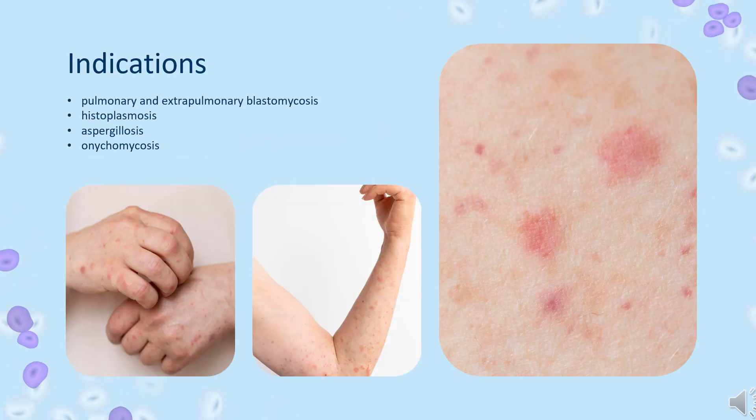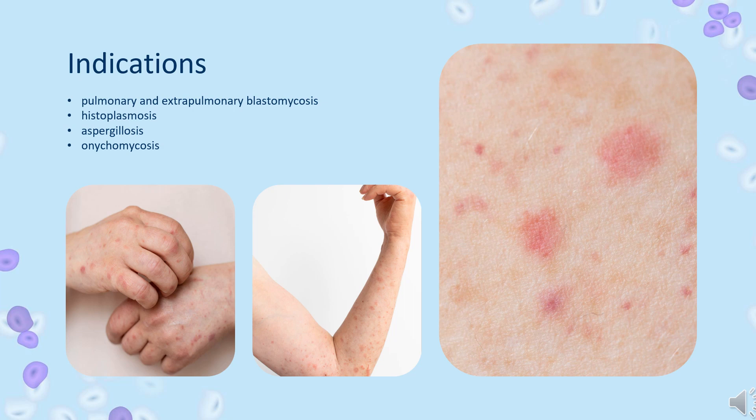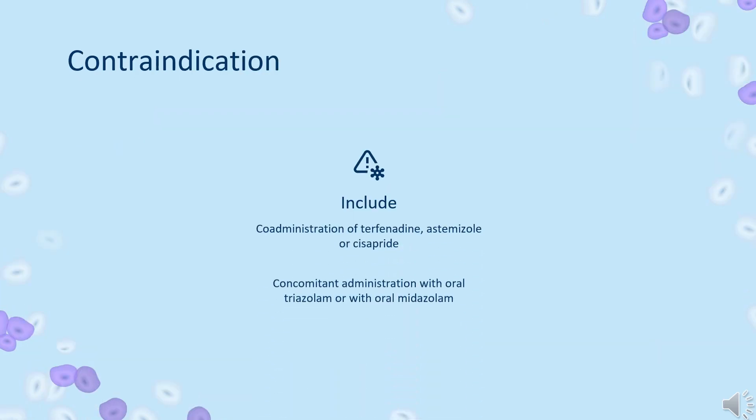What is Itraconazole used for? For the treatment of the following fungal infections in immunocompromised and non-immunocompromised patients: pulmonary and extrapulmonary blastomycosis, histoplasmosis, aspergillosis, and onychomycosis.